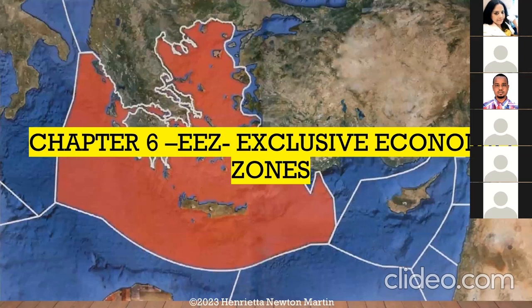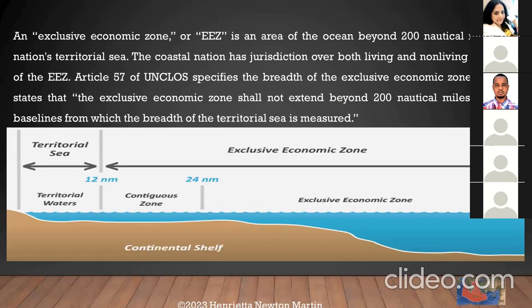Last week we spoke about the demarcations and where the Exclusive Economic Zones are situated. Now we'll study about the EEZ in a bit more detail. An Exclusive Economic Zone or EEZ is an area of the ocean beyond 200 nautical miles of a nation's territorial sea, as you can see on the diagram.